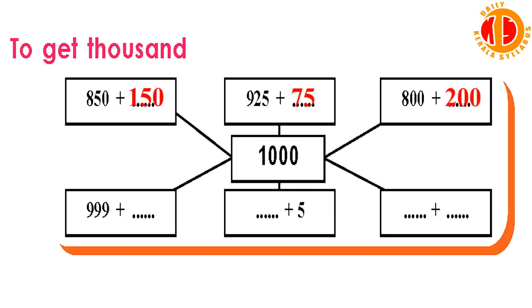We need to get 800. 800 plus dash equals 1,000. If you want to do it, give the answer. How do you do it? We need 800. 800 plus 200 is 1,000.